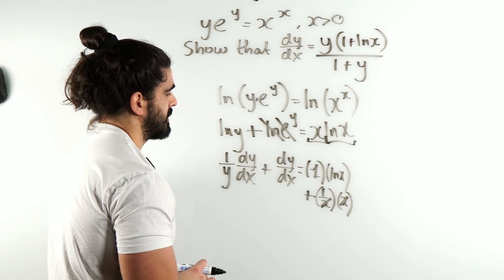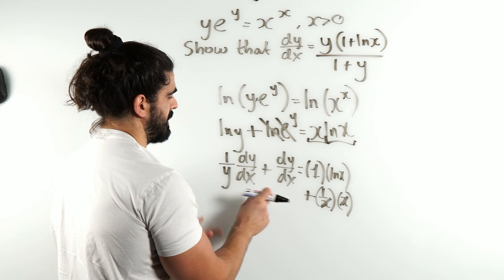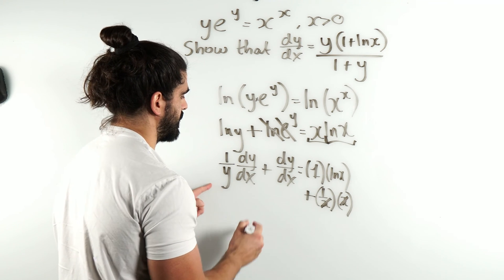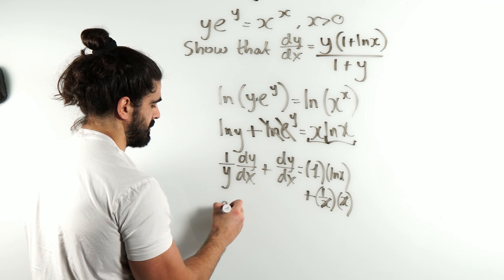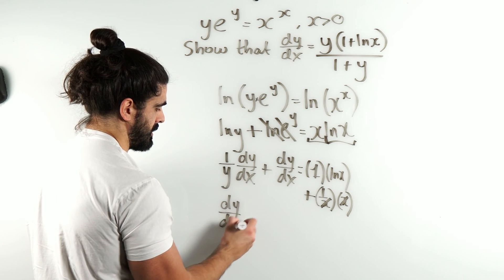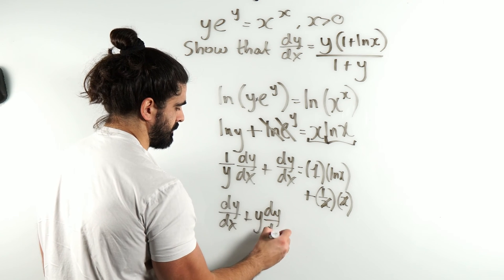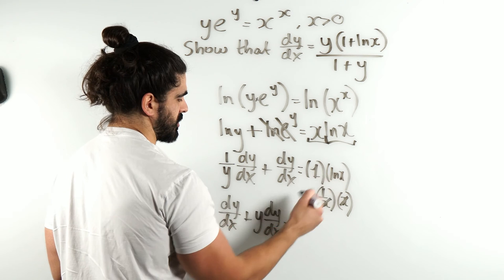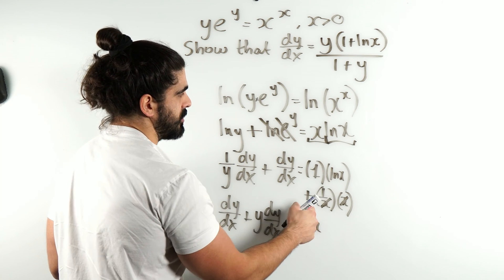Alright, the next thing is we rearrange for dy/dx. Maybe I'll multiply through by y first. If I times through by y, this becomes dy/dx. Times that by y, you get y dy/dx. Equals, remember, ln(x) times y is y ln(x), and then here we just have plus 1.